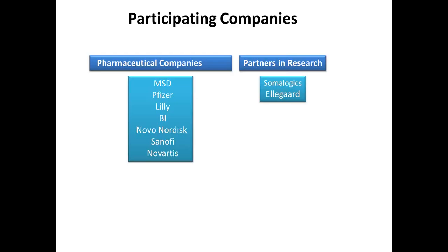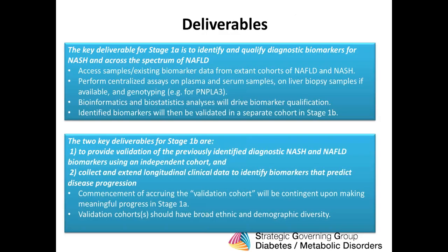Here are the companies on the industry side — the pharmaceutical companies funding and expecting to be active participants in this project: Merck, Pfizer, Eli Lilly, Boehringer Ingelheim, Novo Nordisk, Sanofi, and Novartis. Our partners in research who are also funding and active participants are Somaodjix and Elagard. One final note: we do expect this to be a global cohort. We are all very well aware of emerging genetic data and ethnicity data informing us of NASH genetics and prevalence, so we are expecting a multi-ethnic interrogation to be ultimately put in place.